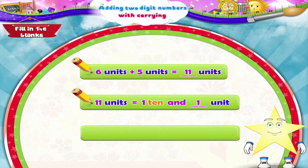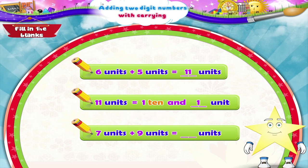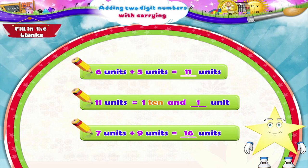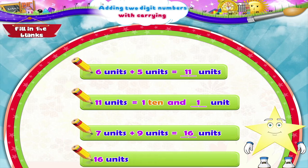Look at the next one, Starry. Seven units plus nine units is equal to how many units? Can you answer this Starry? Yes, seven plus nine is equal to sixteen units. Sixteen units is equal to one ten and six units.